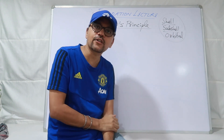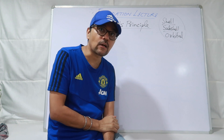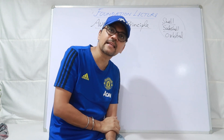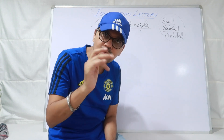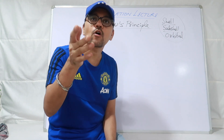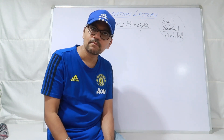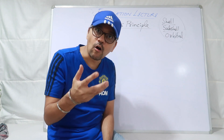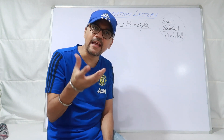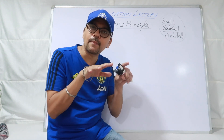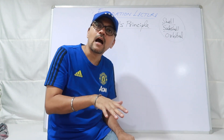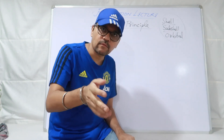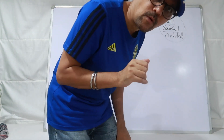Abhi tak aap electronic configuration kaise likhte the? Calcium aaya to atomic number 20, to likhte the 2,8,8,2. Sodium kaise likhte the 11: 2,8,1. Chlorine kaise likhte the: 2,8,7. Barabar hai, but from 11th class aapko ek naye way se likhna padega — in the form of shell, sub-shell and orbital manner. Toh pehle Aufbau principle yaad karna hai. It means 'building up.' Jis energy level pe sabse kam energy hoti hai, wahan electrons pehle jaate hain, aur jaise jaise Ochis formula mein jo aapka badhta jaega, electrons will go later into it.